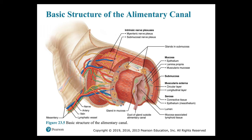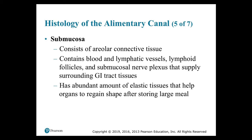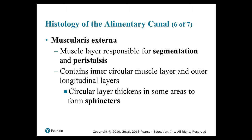The submucosa consists of areolar connective tissue containing blood and lymphatic vessels, lymphoid follicles, and the submucosal nerve plexus — also called the plexus of Meissner — which contains sensory neurons, parasympathetic ganglionic neurons, and sympathetic postganglionic fibers that innervate the mucosa and submucosa. It also has abundant elastic tissue that helps organs regain shape after storing a large meal. The muscularis externa is the muscle layer responsible for segmentation and peristalsis, containing an inner circular muscle layer and outer longitudinal layer; the circular layer thickens in some areas to form sphincters.